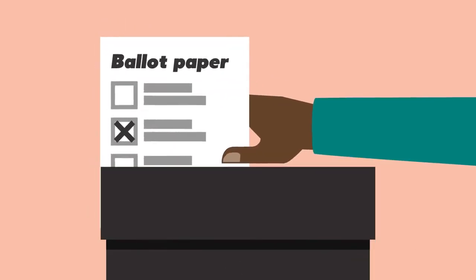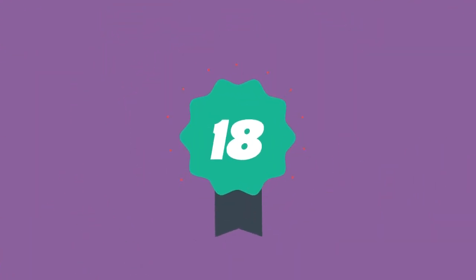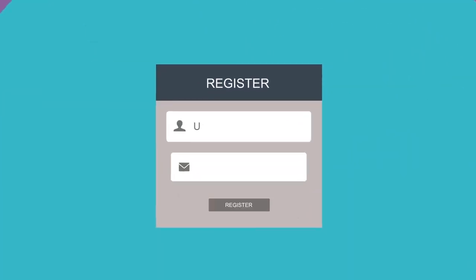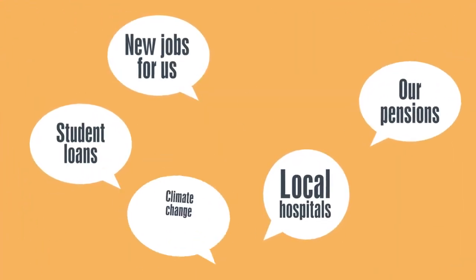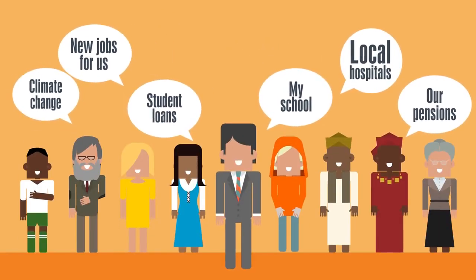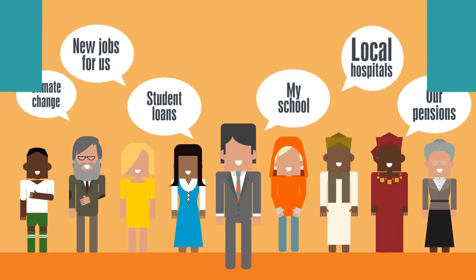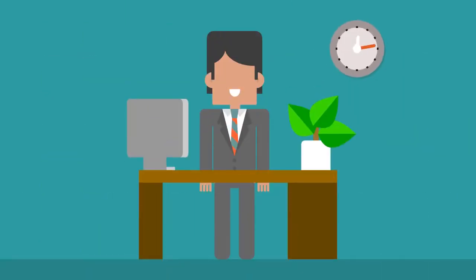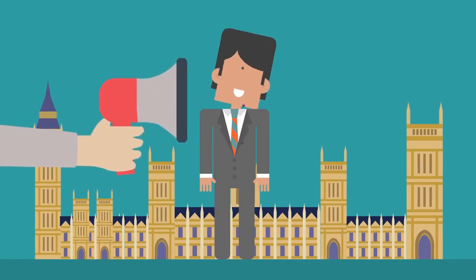One way to have a say in how the country is run is to use your vote. You have to be 18 or over to vote in general elections, but you can register from the age of 16. There are lots of other ways to get involved and have your voice heard, whatever your age. MPs represent all of their constituents. You can visit an MP in their local constituency office, or even travel to the Houses of Parliament to lobby them in Central Lobby.